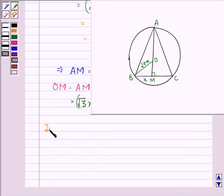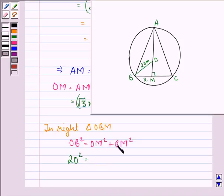Now, in right angle triangle OBM, that is this triangle, again by the Pythagoras theorem, we have OB square is equal to OM square plus BM square. Now, we have 20 square is equal to root 3x minus 20 the whole square and BM square will be x square.